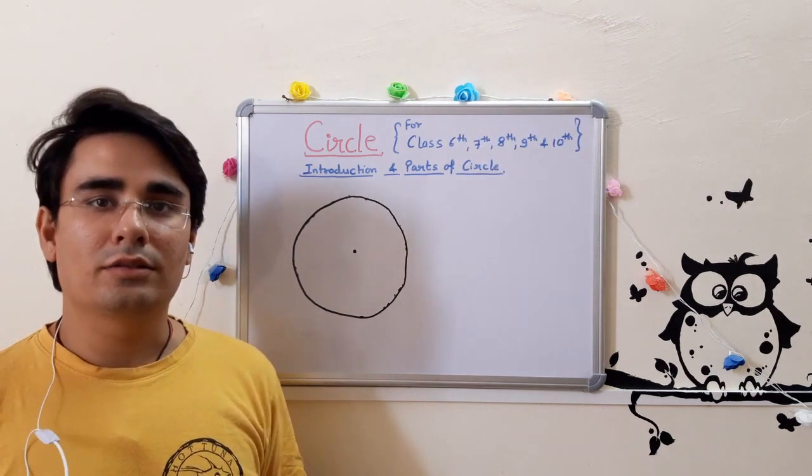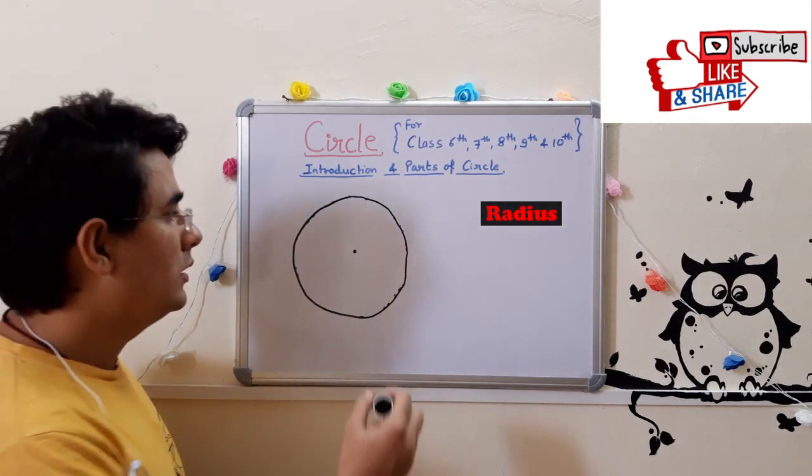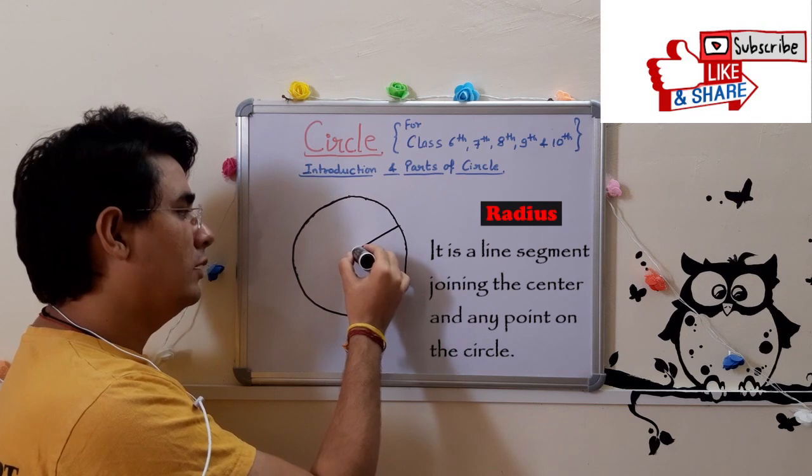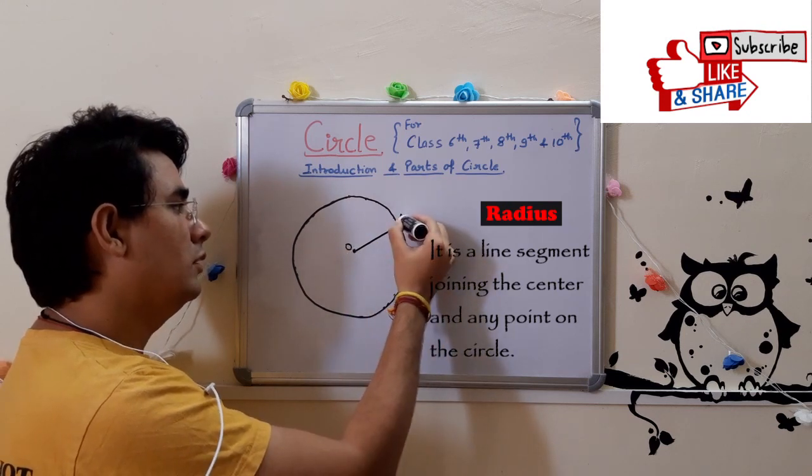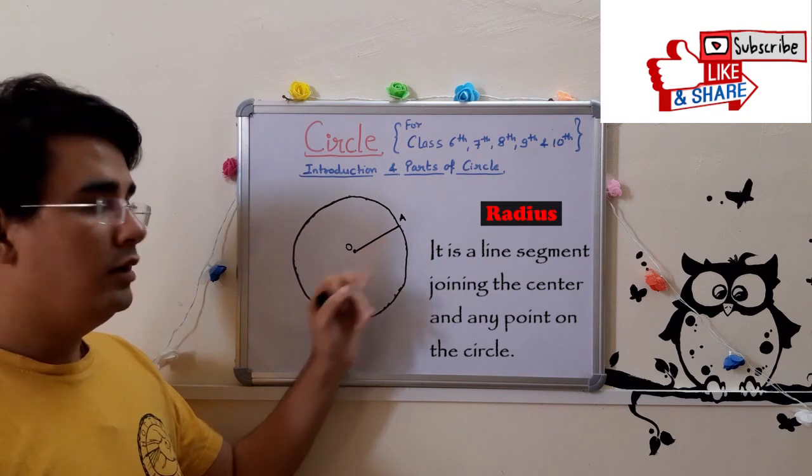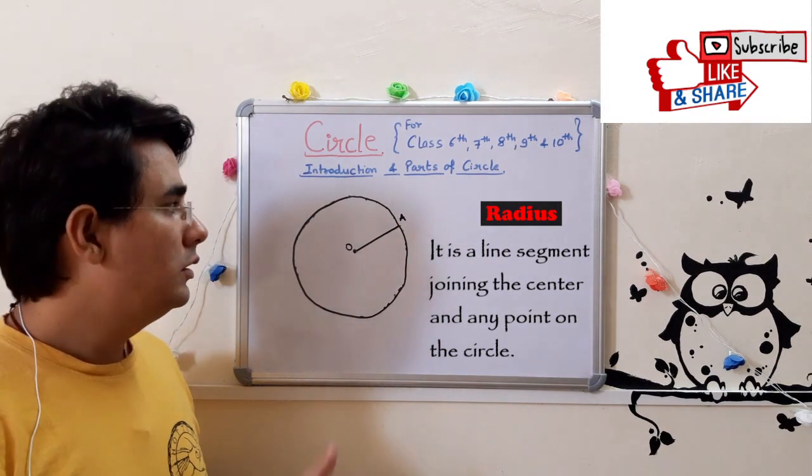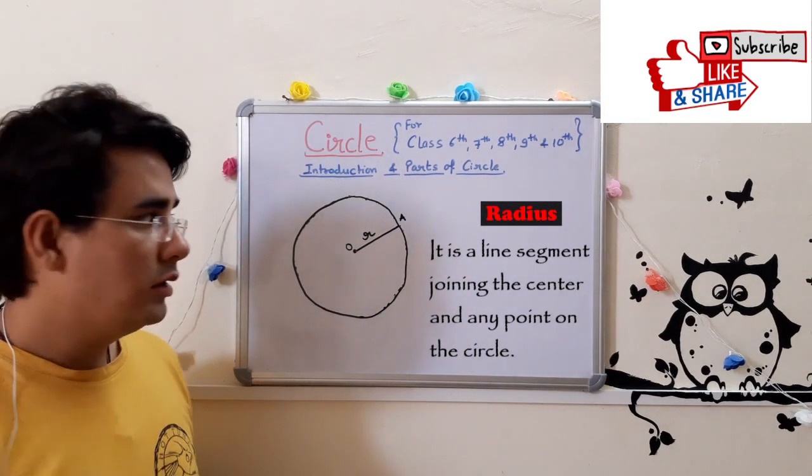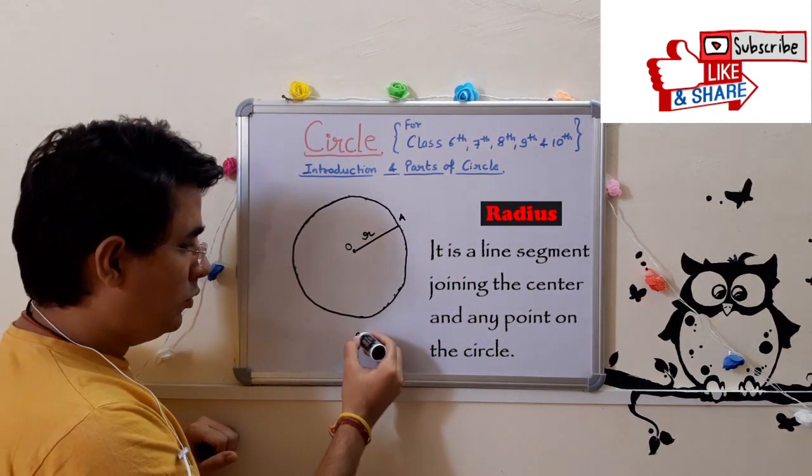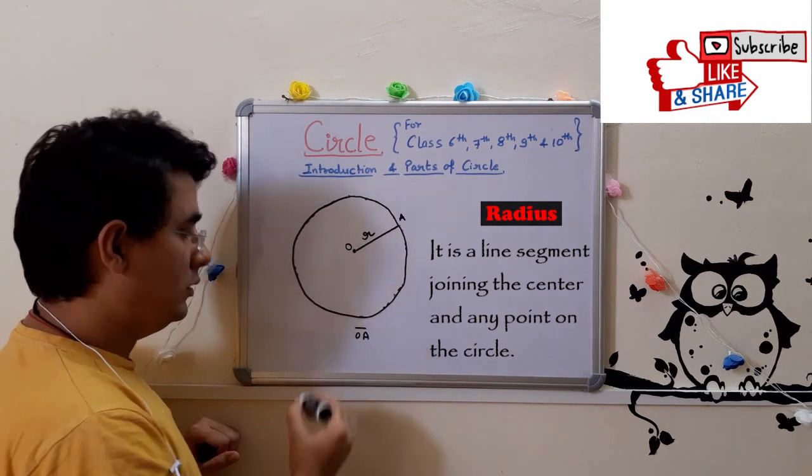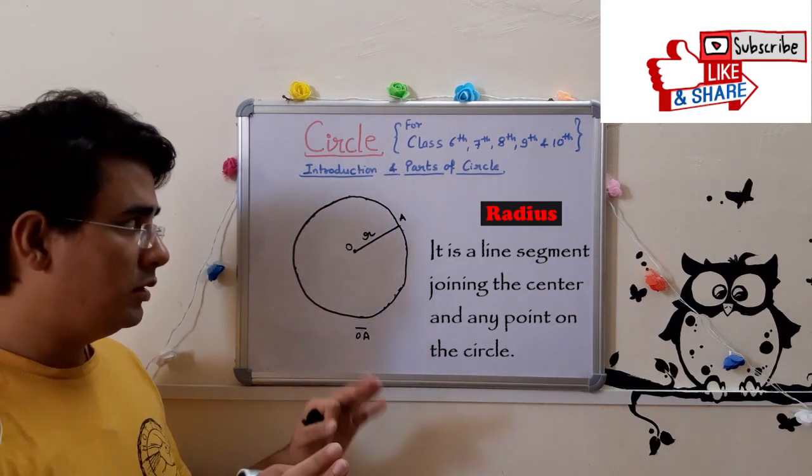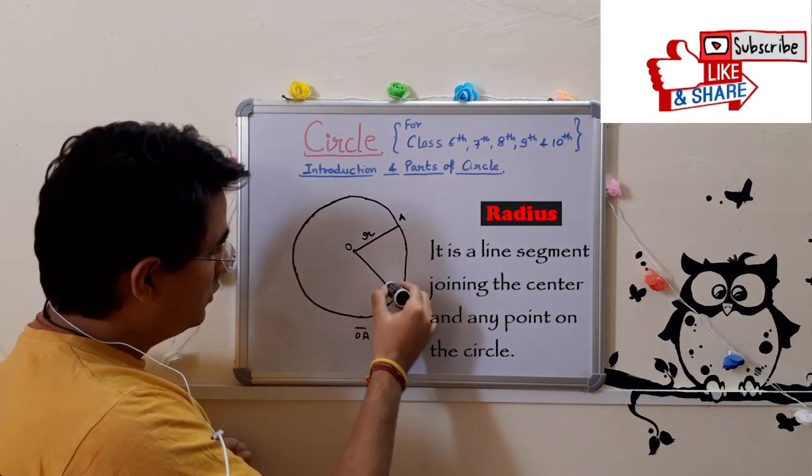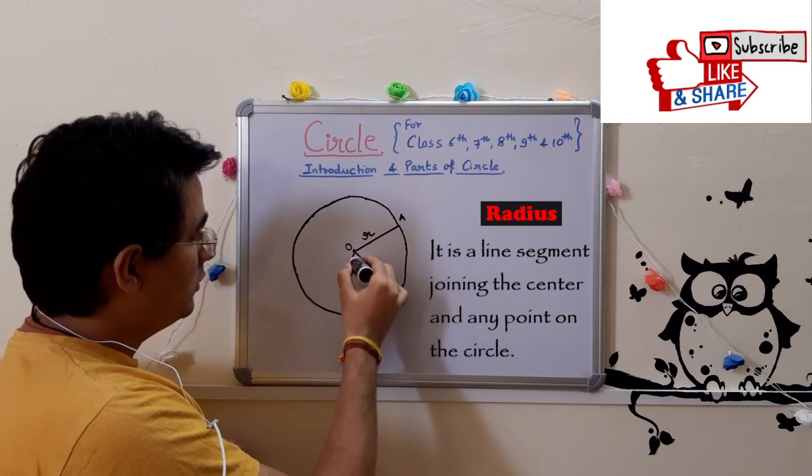Now coming to the radius. Radius is a line segment between center and a point on the circumference. Radius can be located wherever we want, like this or like this.